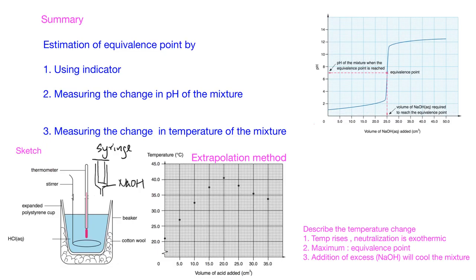To summarize: other than using an indicator, we can also measure the change in pH or measure the change in temperature of the mixture to find the equivalence point. For the change in pH method, as the pH increases sharply, you find the middle point of the vertical section — that equals the equivalence point. For the temperature method, the setup uses expanded polystyrene cup and cotton wool to reduce heat loss to the surrounding, and NaOH is added using a syringe or burette to control the volume.